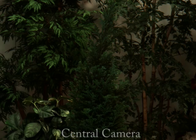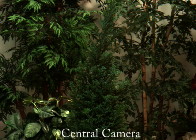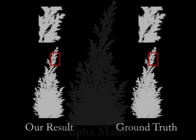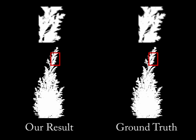Here we extract an alpha-mat for a tree filmed in front of several other trees. While a single image isn't very revealing, using a camera array, we recover a tri-map and an alpha-mat. Our alpha-mat recovers details such as a single pine needle, also seen in the ground truth alpha-mat.